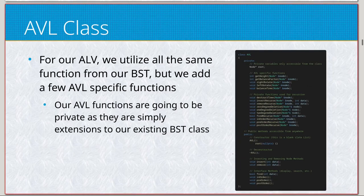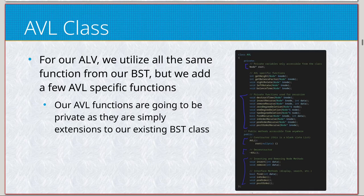The AVL class is again very similar to the BST class. All the same functions exist — the root, constructor, destructor — and none of our public functions have changed. The only difference between our binary search tree and our AVL in terms of functions are these AVL-specific ones: get height, get balance factor, right rotate, left rotate, and balance tree. These are all necessary for the self-balancing aspect of the AVL.